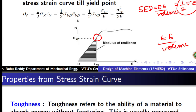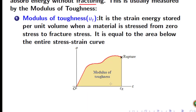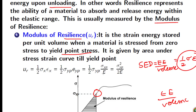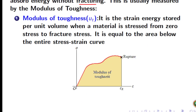Toughness refers to the ability of a material to absorb energy without fracturing. The modulus of resilience equals the area under the stress-strain curve up to the yield point, while the modulus of toughness is the area under the stress-strain curve up to rupture. Both are strain energy densities at different points: the first up to the yield point, the second up to fracture or rupture.